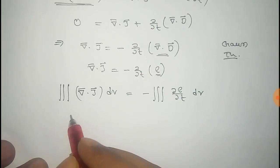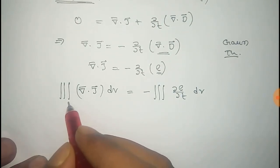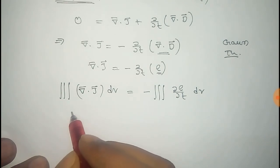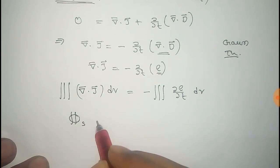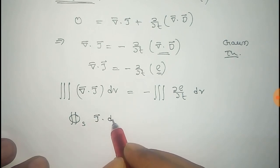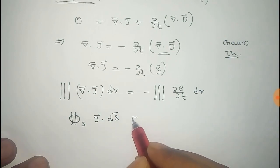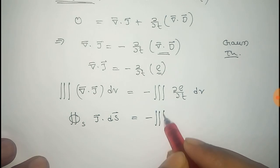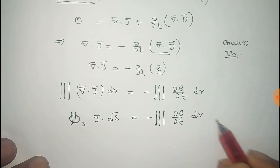Now, using divergence theorem, we can write this divergence J dV is equal to surface integral of J dot dS, that is closed surface integral J dot dS equal to this term.